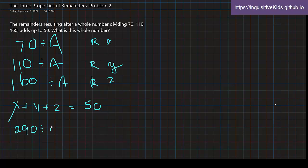290 divided by A would have a remainder of 0. So A, in other words, is a factor of 290.